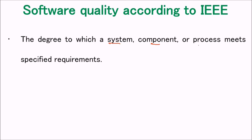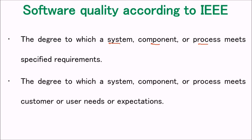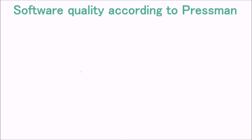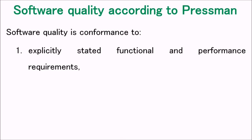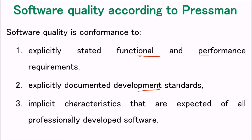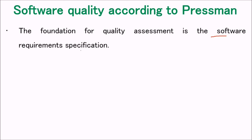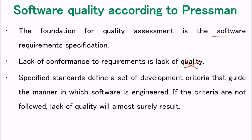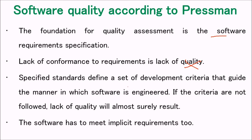According to IEEE, software quality is the degree to which a system, component, or process meets specified requirements, and the degree to which it meets customer or user needs and expectations. According to Pressman, software quality is conformance to explicitly stated functional and performance requirements, explicitly documented development standards, and implicit characteristics expected of all professionally developed software. The foundation of quality assessment is the software requirements specification; lack of conformance to requirements means lack of quality.